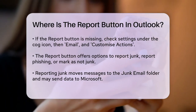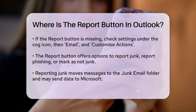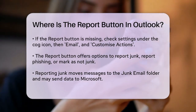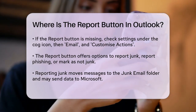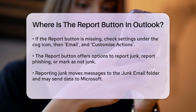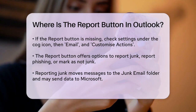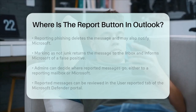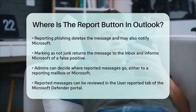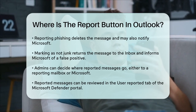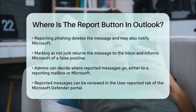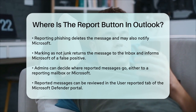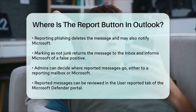When you use the Report button, you have several options. Report Junk moves the message to your junk email folder and may send a copy to Microsoft to help improve spam filters. Report Phishing deletes the message and may send a copy to Microsoft to update their phishing filters. Not Junk moves the message from the junk email folder back to your inbox and reports it as a false positive to Microsoft.